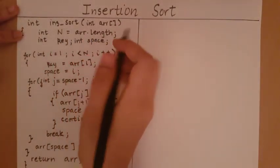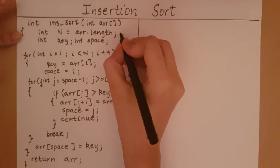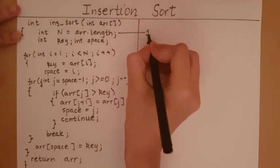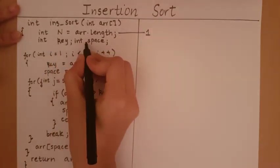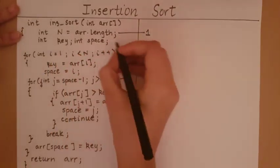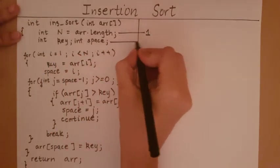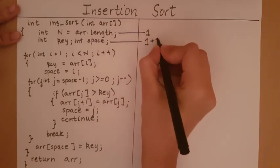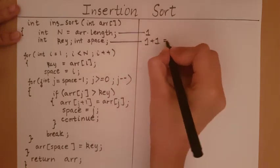The statement 'n = array.length' is going to take unit time. Each of these statements will take unit time, so this will be 1 plus 1, equal to 2.